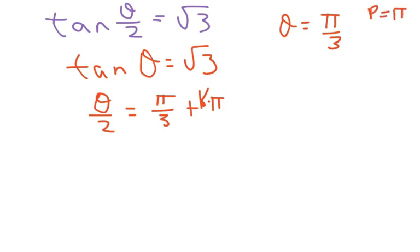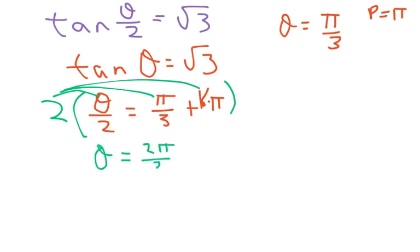Now, you multiply everything by 2 to solve for theta. So I'm just distributing the 2. And we get theta equals 2 pi over 3 plus 2k pi.